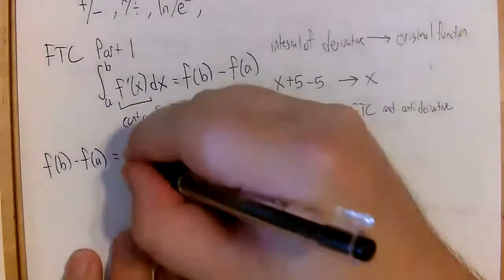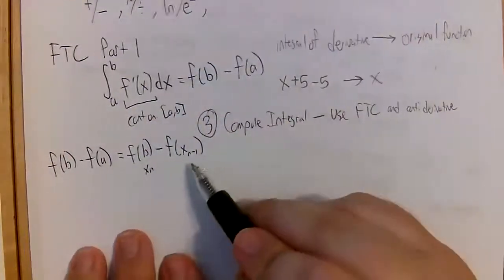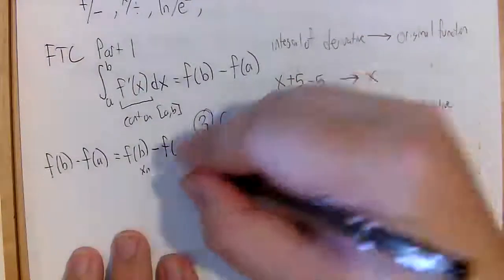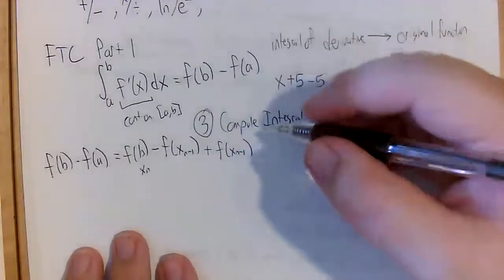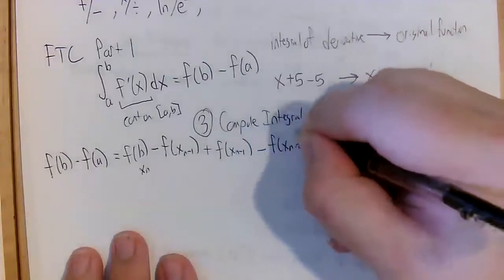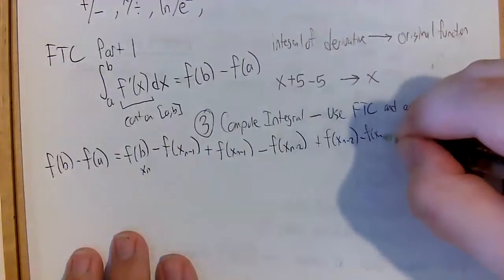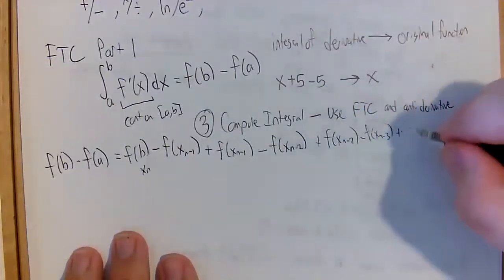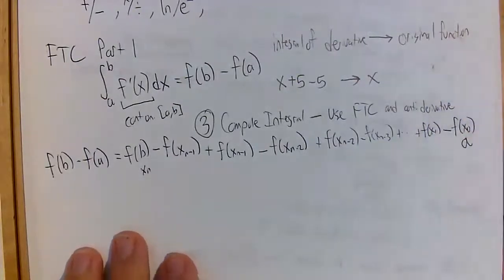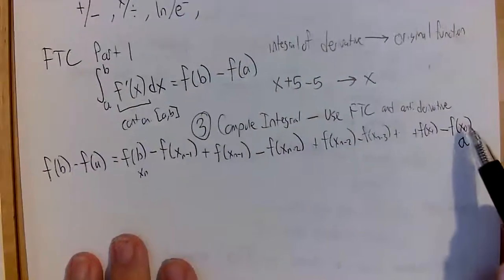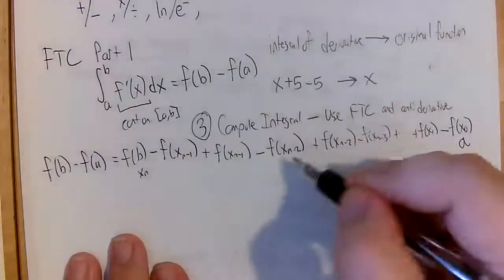I'm going to write f of b as f of x_n minus f of x_{n-1}, which is a tiny step backwards from b. To balance it, I add f of x_{n-1} back in. Then I subtract f of x_{n-2} and add it back in, and subtract f of x_{n-3}, and this keeps going until I add f of x_1 and subtract f of x_0. It turns out f of x_0 is a, so our b is x_n and our a is x_0. All the intermediate terms cancel out, so this whole expression equals f of b minus f of a.